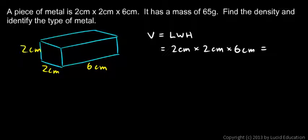2 times 2 is 4 times 6 is 24. So that's 24 cubic centimeters. That's the volume.